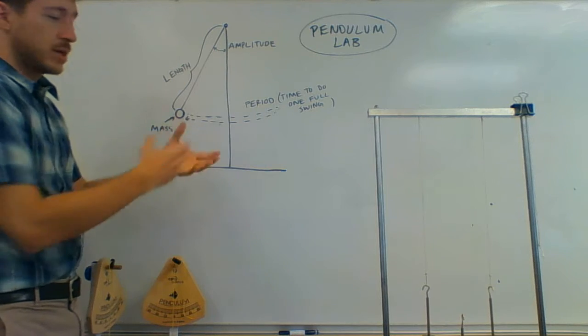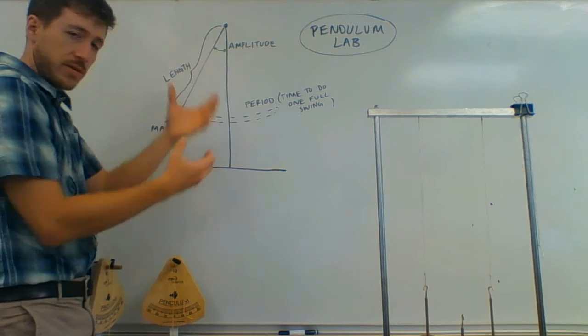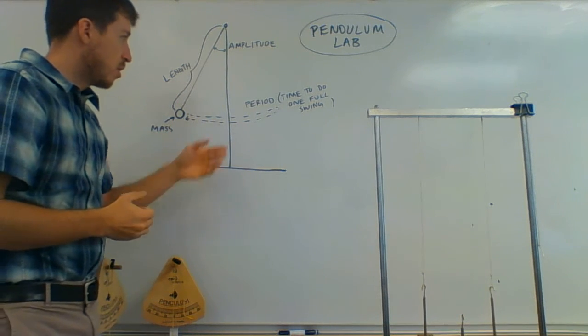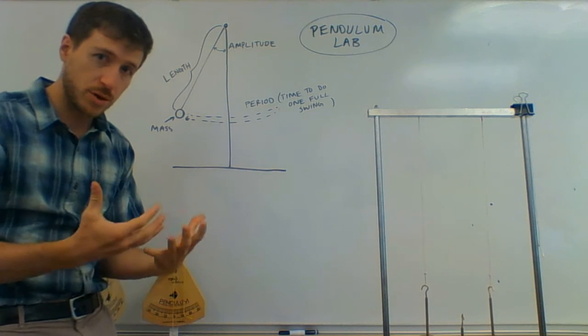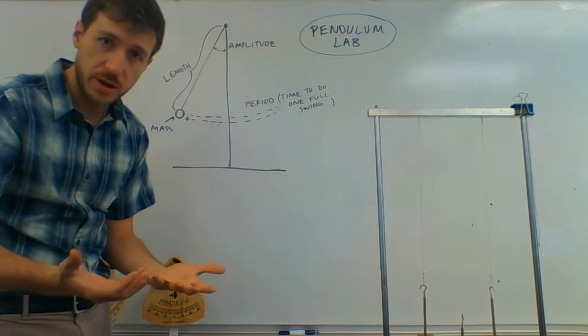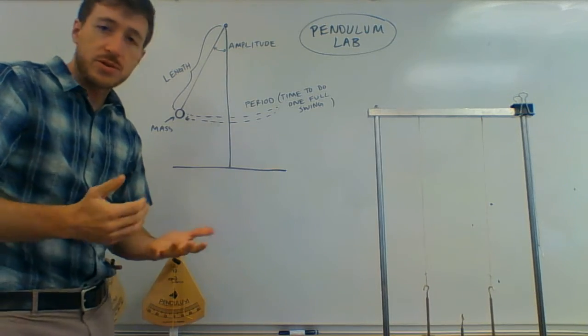So we have amplitude is a thing that we can vary, length we can vary, mass we can vary, and those are the things that could affect the period. Now we don't know which ones of those actually do affect the period yet, so that's going to be the first thing that we'll talk about.